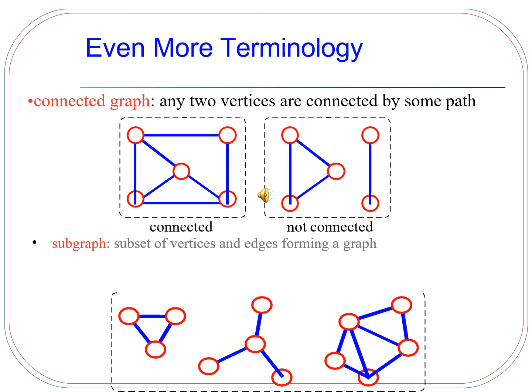What is a connected graph? Any two vertices of a graph that are connected by some path is known as a connected graph. What is a subgraph? A subset of vertices and edges forming a graph is known as a subgraph.